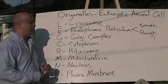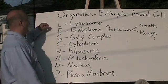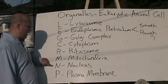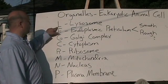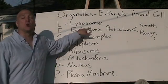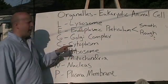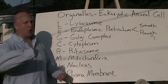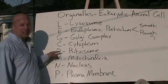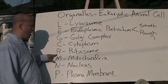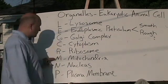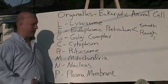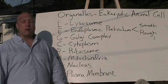Let's go through our mnemonic method again. Please say 'leg cramp' — L, E, G, C, R, M, N, P. Leg cramp. L — Lysosome. E — Endoplasmic reticulum. G — Go-go Golgi complex. C — Cytoplasm. R — Ribosome. M — Mighty Mitochondria. N — Nucleus. P — Plasma membrane.